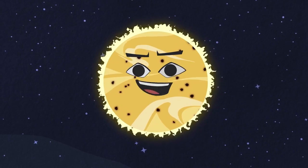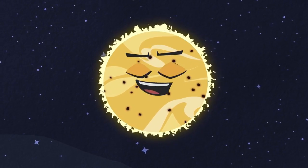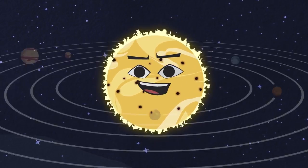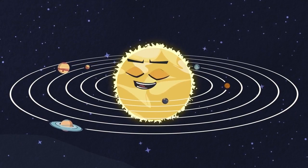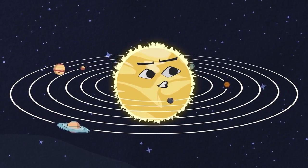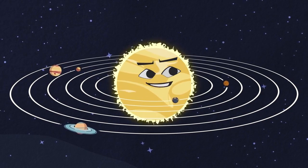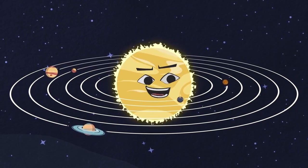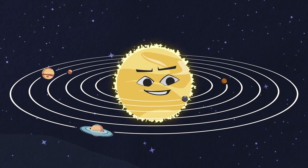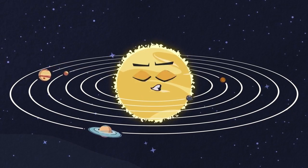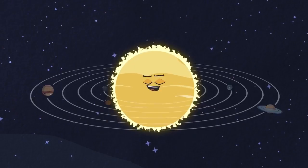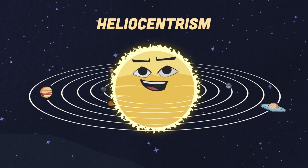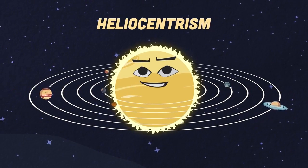Galileo also learned that the sun had spots on it — this indicated the sun was definitely rotating. All this information proved that the heliocentric model was right, and from that point on it was accepted, all from staring up at night.